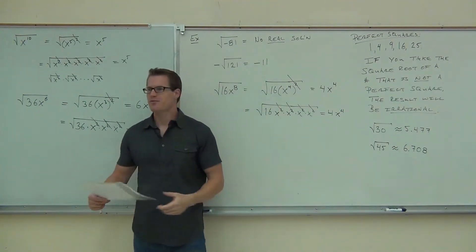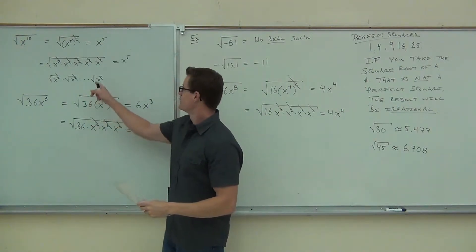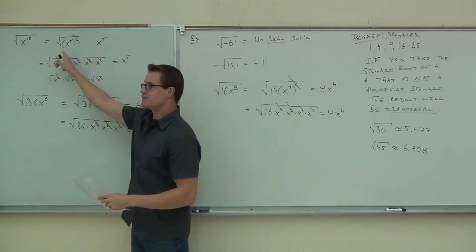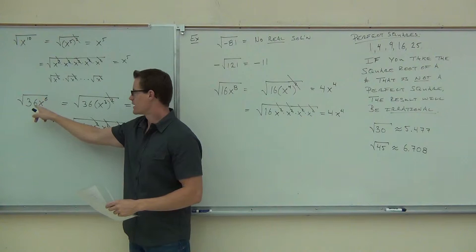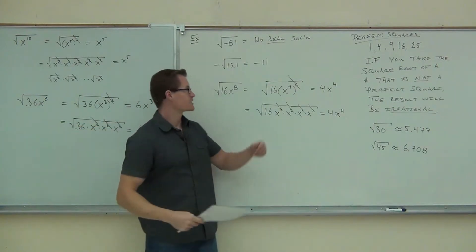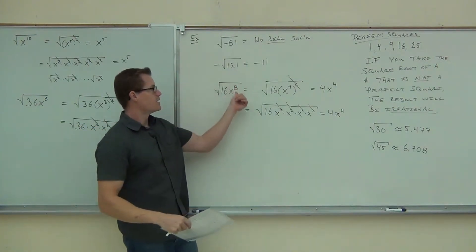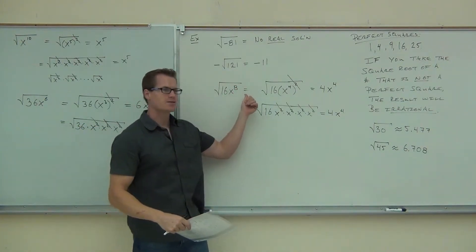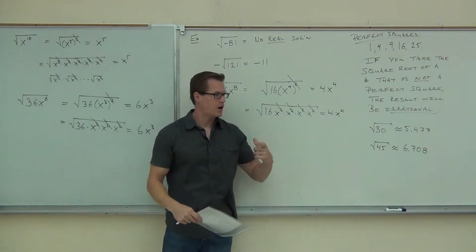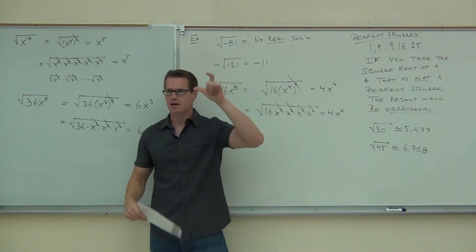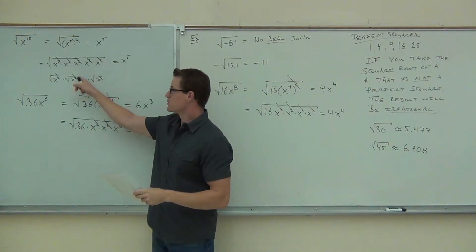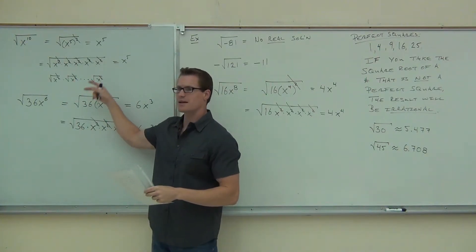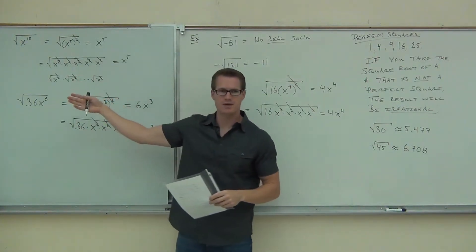You should also be able to simplify any variable I give you — x to the 10th, x to the 6th, x to the 8th. Right now we haven't done any odd power yet, but we'll get to that. This is the method we would use for that, which is why I kind of previewed that information.